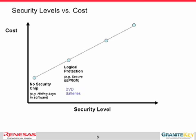One level above that is what's called logical protection. There's a class of chips called Secure E2 where you can store the key inside the chip, and the chip has logical protection. What that means is that if you don't have physical access to the chip — if you only have access through the bus — then no matter how much you bang away on the bus and send signals to it and try to confuse it, you can't get the data out of the chip.